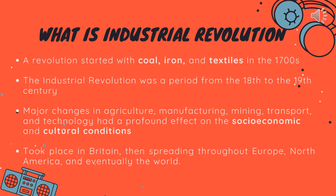A revolution started with gold, iron and textile in the 1700s. The industrial revolution was a period from the 18th to the 19th century. Major changes in agriculture, manufacturing, mining, transport and technology had a profound effect on the social economy and the cultural condition.